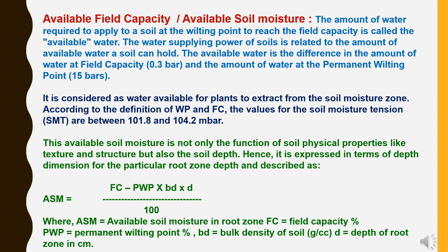Available soil moisture is expressed in terms of depth dimension for a particular root zone depth, and is described by the formula: ASM = (FC − PWP) × BD × d / 100, where ASM is available soil moisture in the root zone, FC is field capacity percent, PWP is permanent wilting point, BD is bulk density of soil, and d is depth of root zone in centimeters.